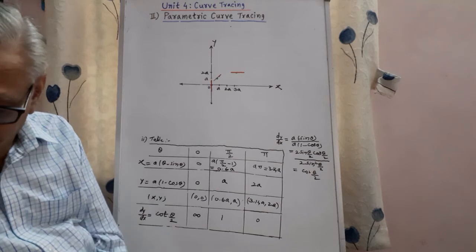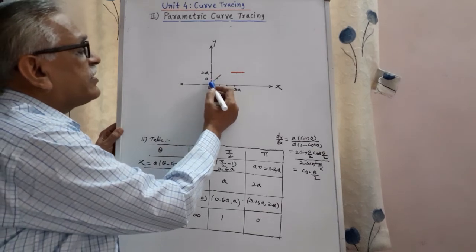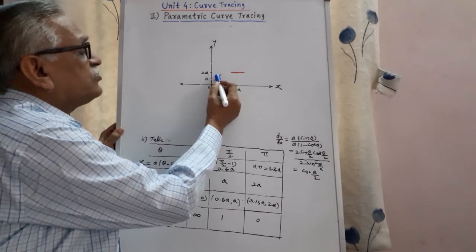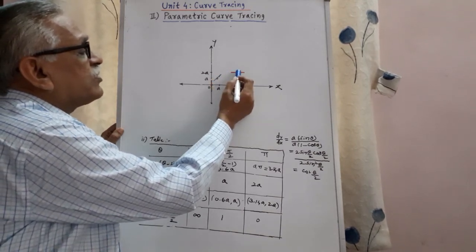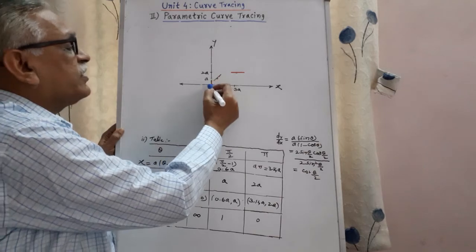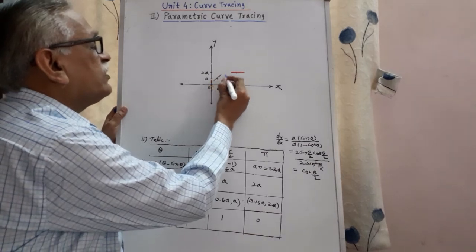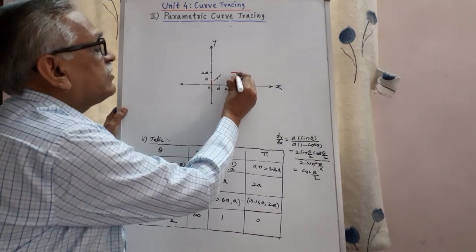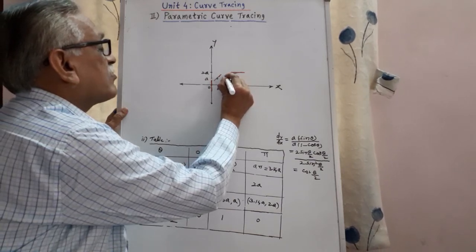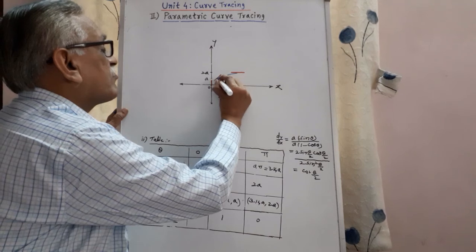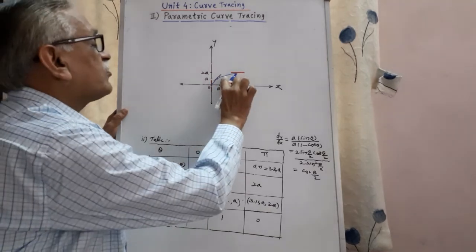Then join this point taking care that we have to join the points touching the curve in that particular point only, it will not intersect anywhere this tangent. Therefore joining origin to this point, this to this point, we get half part of the curve.